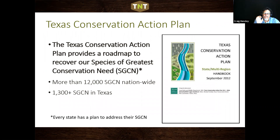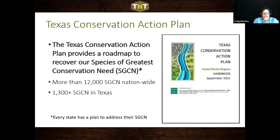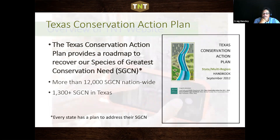All of this is done because of what's known as the Texas Conservation Action Plan, or TCAP. The TCAP provides a roadmap to recover species of greatest conservation need. In Texas, we have more than 1,300 SGCNs, and nationwide anywhere from 12,000 to 15,000 — a number that flexes as we learn more about individual species. Sometimes it's actually through community science that we get enough data to determine a frog or plant is not as rare as we thought, and it can come off the list.